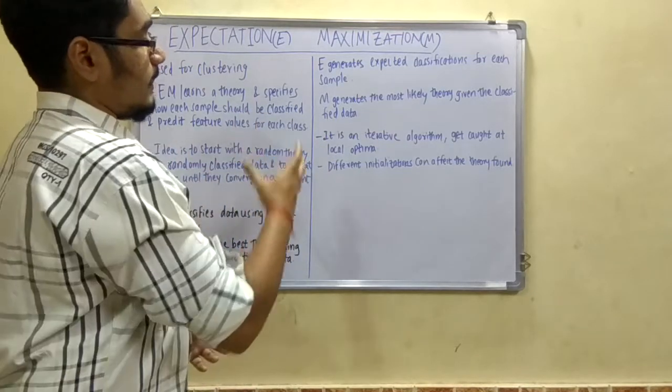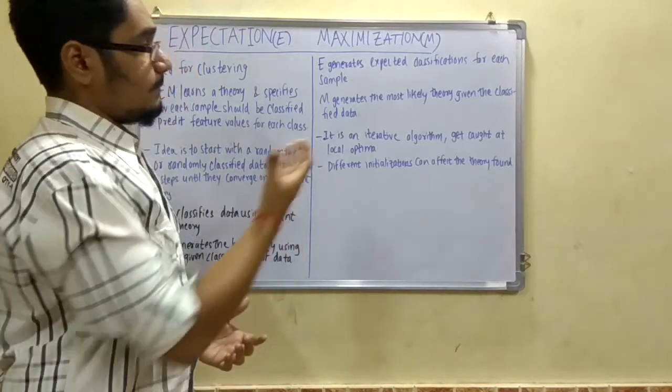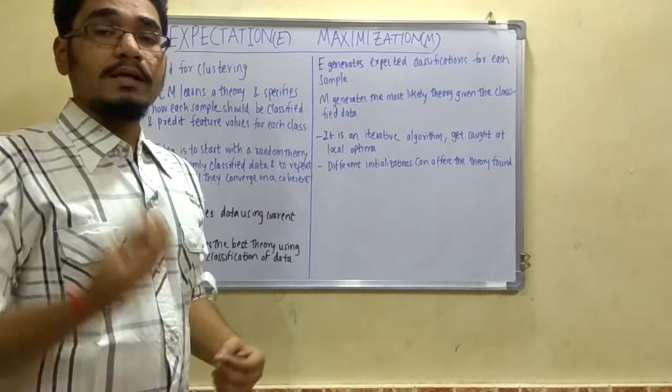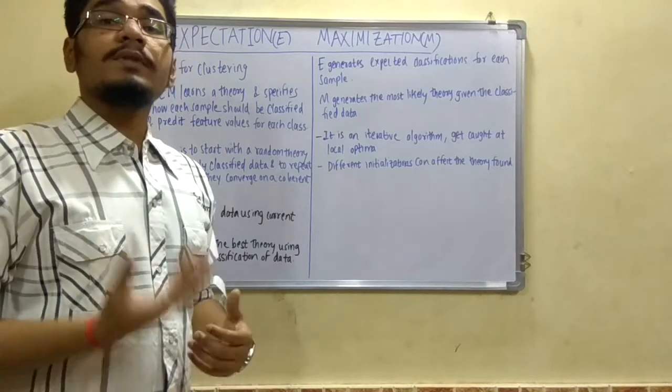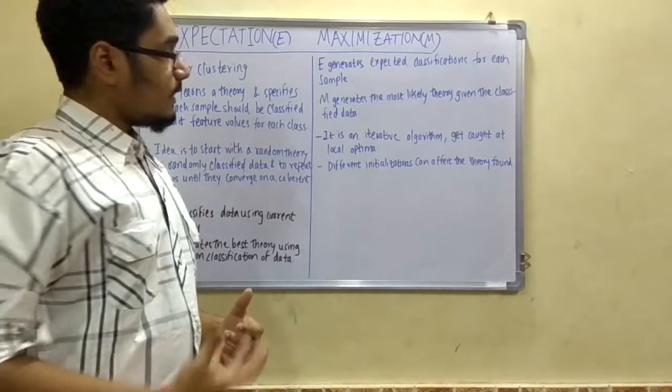M generates the most likely theory given the classified data - it will generate the best theory which is suitable for the agent to understand, which will consume minimum memory so that the maximum and errorless output is obtained at the earliest.